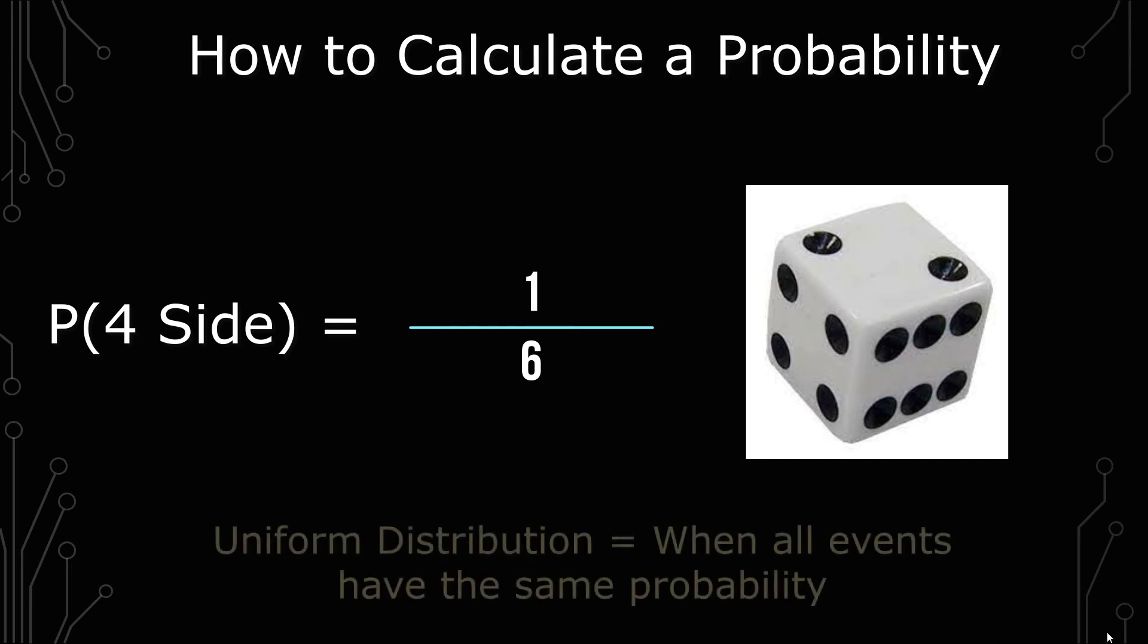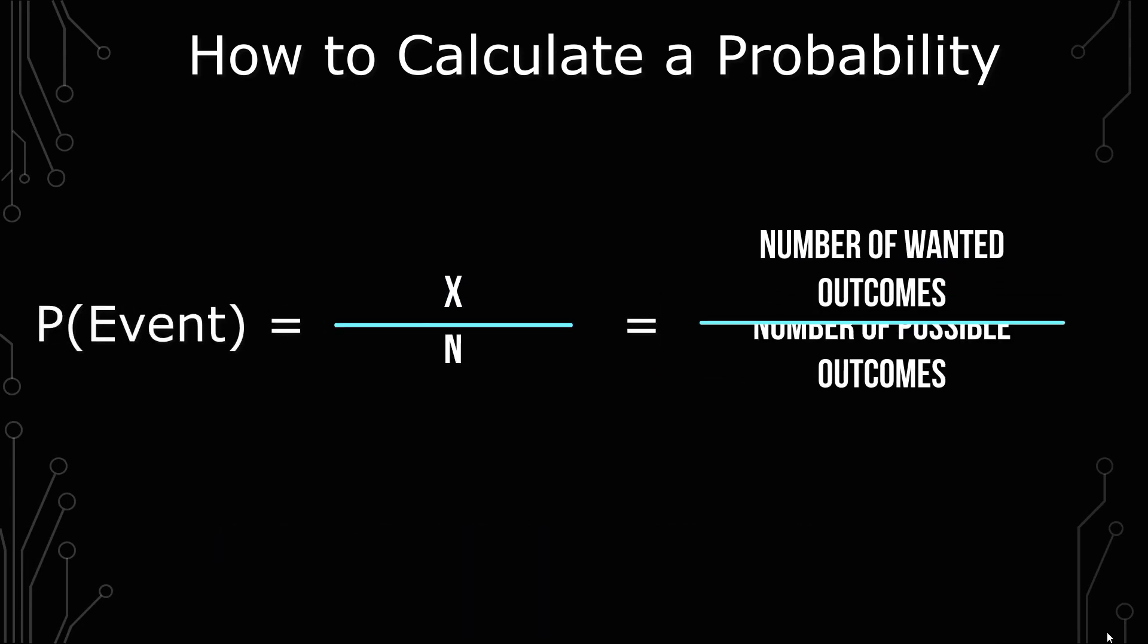That's called a uniform distribution, but those aren't uncommon. That's how you calculate a probability. It's x over n. And if you want to know how to convert a probability to odds, I have a video right here that you'll be able to do that. So click there if you want to learn how to convert probability to odds.